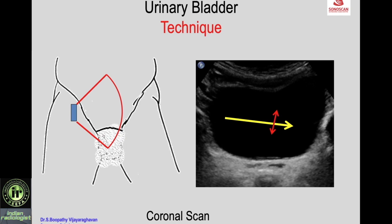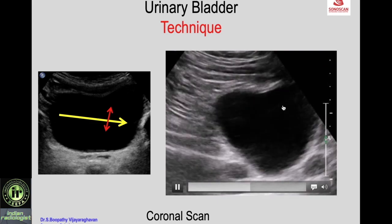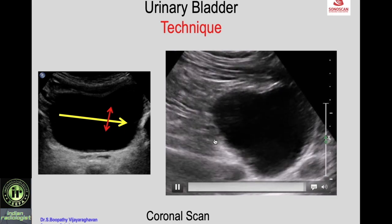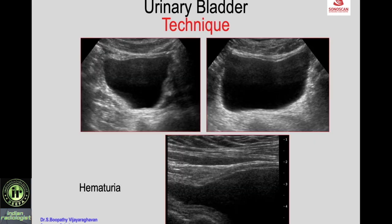The coronal scan is done by placing the transducer in the contralateral iliac fossa. For example, to see the left lateral wall of the bladder, place the probe in the right iliac fossa, parallel to the body, with the beam almost coronal. Then make an anterior-posterior sweep so you see the entire wall. The video shows the movement: from the right iliac fossa you make a coronal sweep to see the left lateral wall of the urinary bladder.